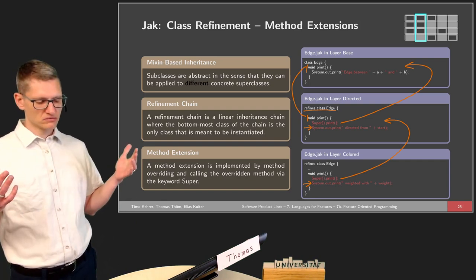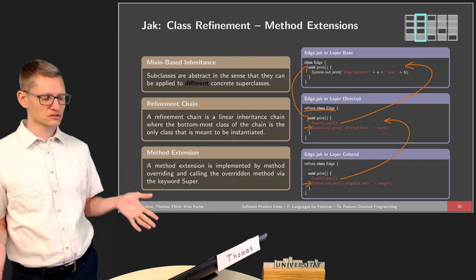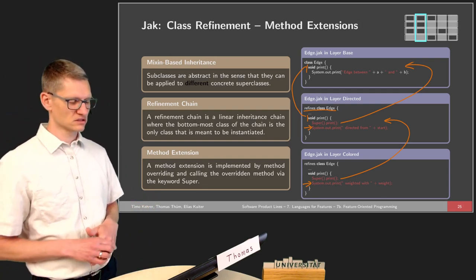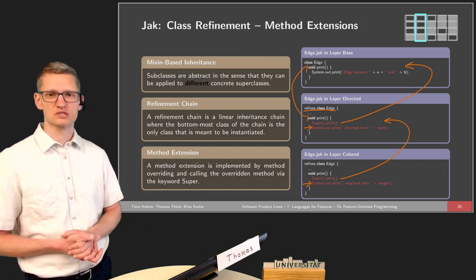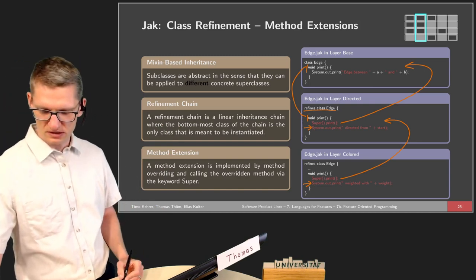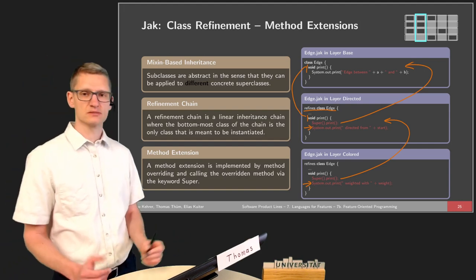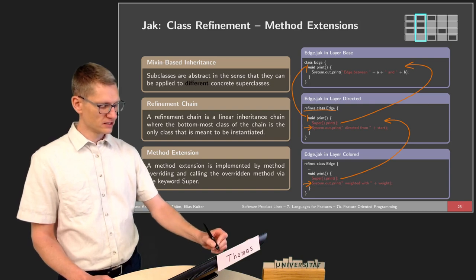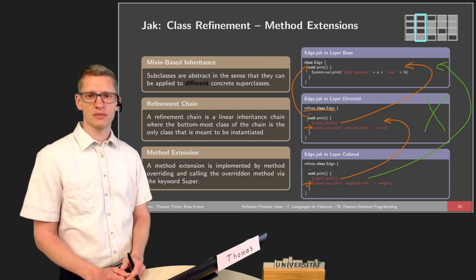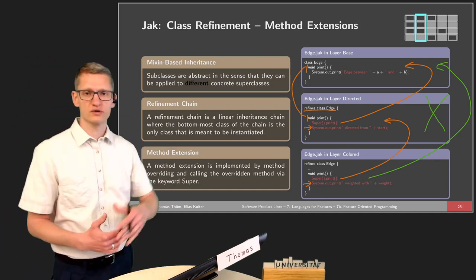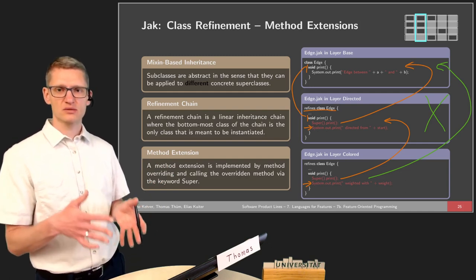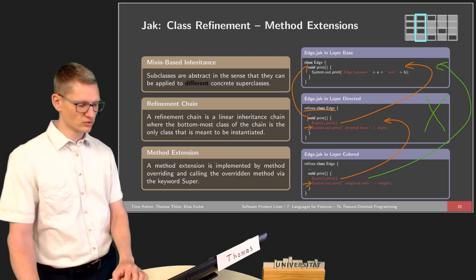This is then refined further, calling the base implementation and adding additional functionality in terms of the layer color. We can overwrite methods, which is very similar to object orientation, except for the 'Super' with a capital S and the 'refines' keyword — in inheritance we would use the 'extends' keyword. The interesting and more flexible part over object-oriented inheritance is that if I say I don't need a certain collaboration, the refinement chain changes accordingly — something not feasible with classical inheritance.